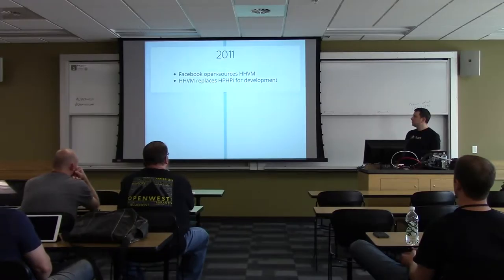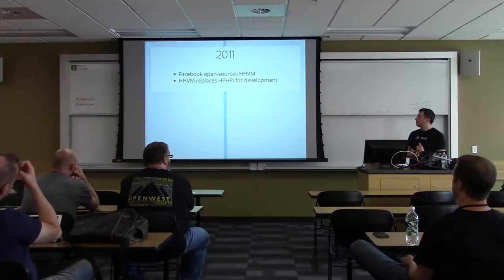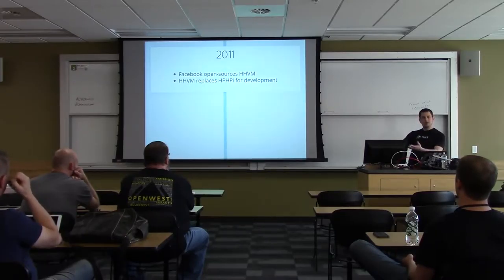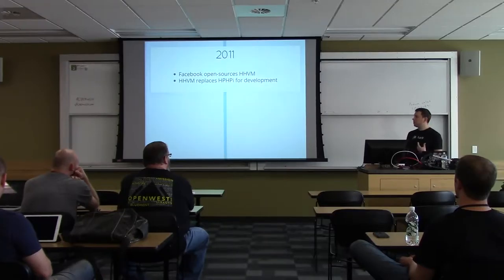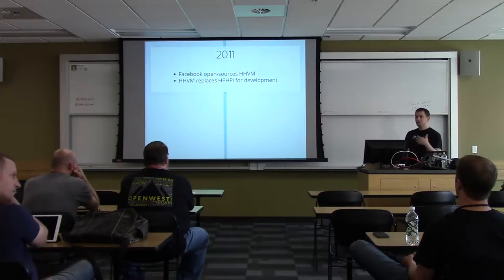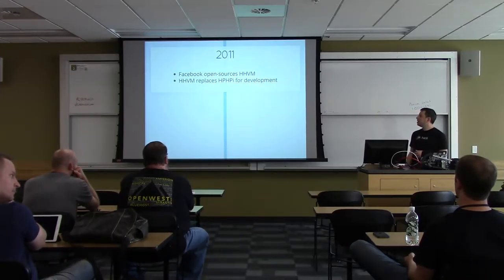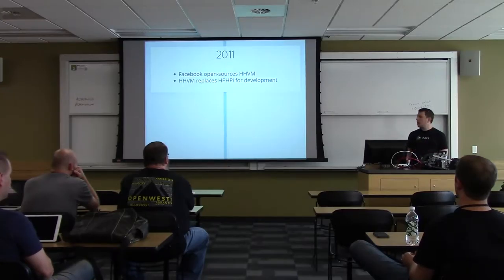A year later Facebook did the same thing they previously did with the HipHop compiler — they took HHVM, threw it on GitHub, invited other people to play with it and integrate with it. It was also at this time that HHVM was mature enough, when they open sourced it, to replace the HipHop compiler internally. So they were still using the thing originally developed in 2008 until 2011. This is when they started eating their own dog food officially.